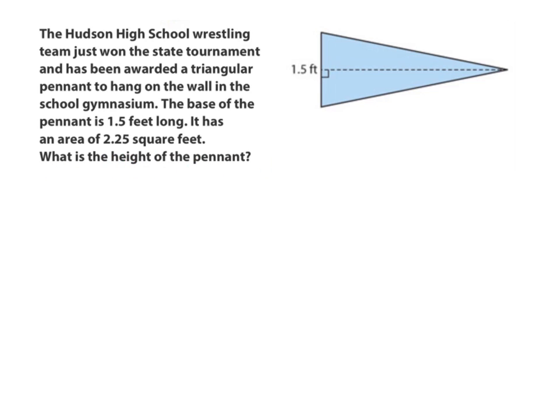The first thing you want to do, we're talking about a triangle, is write the formula for the area of a triangle. And that's one half times the base times the height. We've already learned that. And then we just plug in the information that we know. Well, we know that the base is one and a half feet long and that the area is 2.25 square feet. So you look at your equation and just fill in the information that we know. Area equals A. So that's going to be the 2.25 square feet. Base, we were told, is 1.5 feet. And then height is what we're looking for. So just fill in what you know.